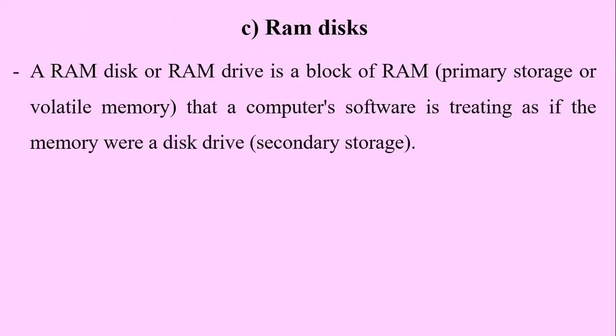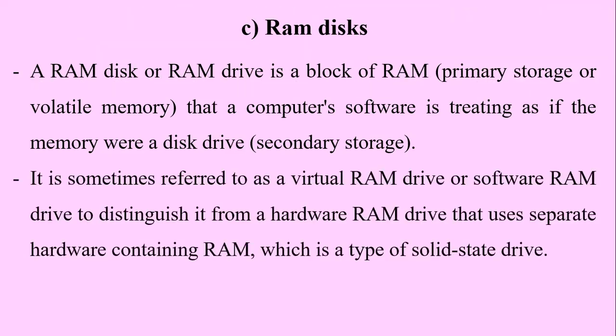Let's now look at what we call RAM disks — random access memory disks. A RAM disk or RAM drive is a block of RAM that is primary storage (volatile memory) that a computer's software is treating as if it were a disk drive — that is, as if it were secondary storage. It is sometimes referred to as a virtual RAM drive or software RAM drive to distinguish it from a hardware RAM drive that uses separate hardware containing RAM, which is a typical type of solid state drive.